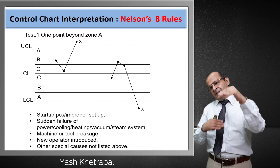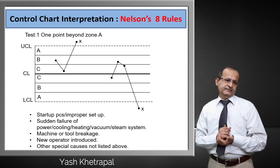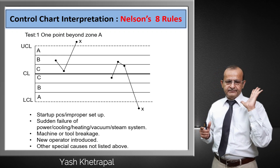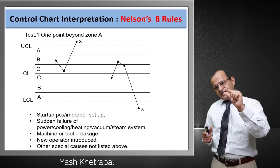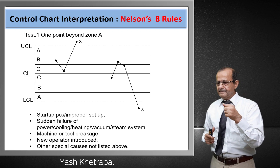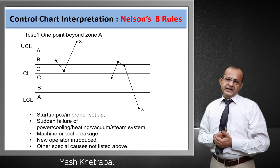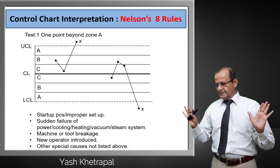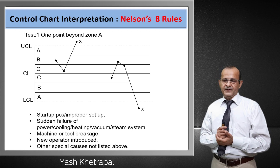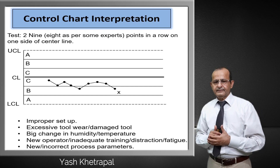It can be a very big variation. It could be due to sudden failure of power, cooling system failure, or other massive causes. It could be a set-up issue or any other special cause — an abnormal condition. So that is the interpretation of Rule Number 1: one point beyond Zone A.